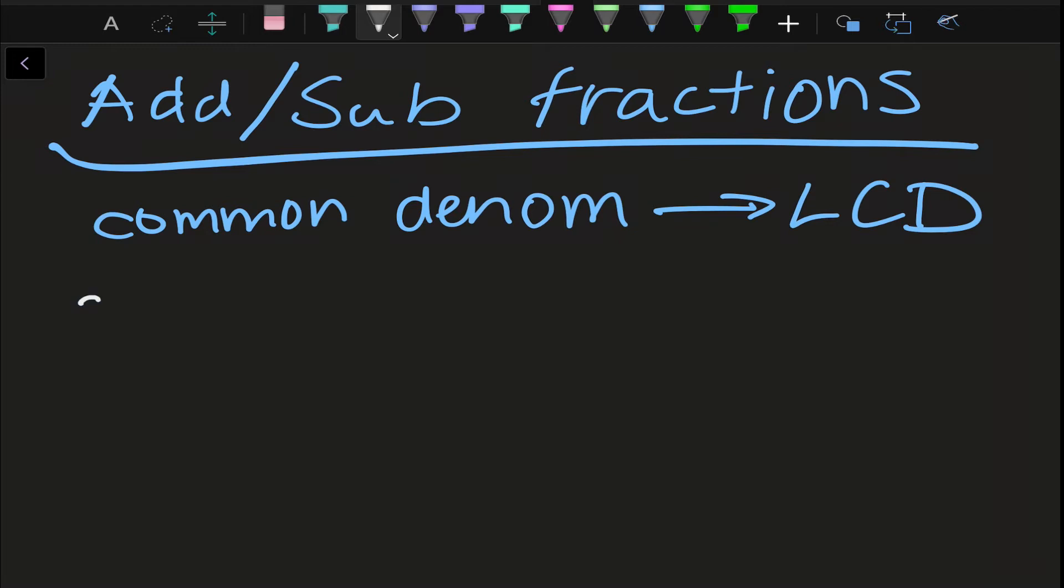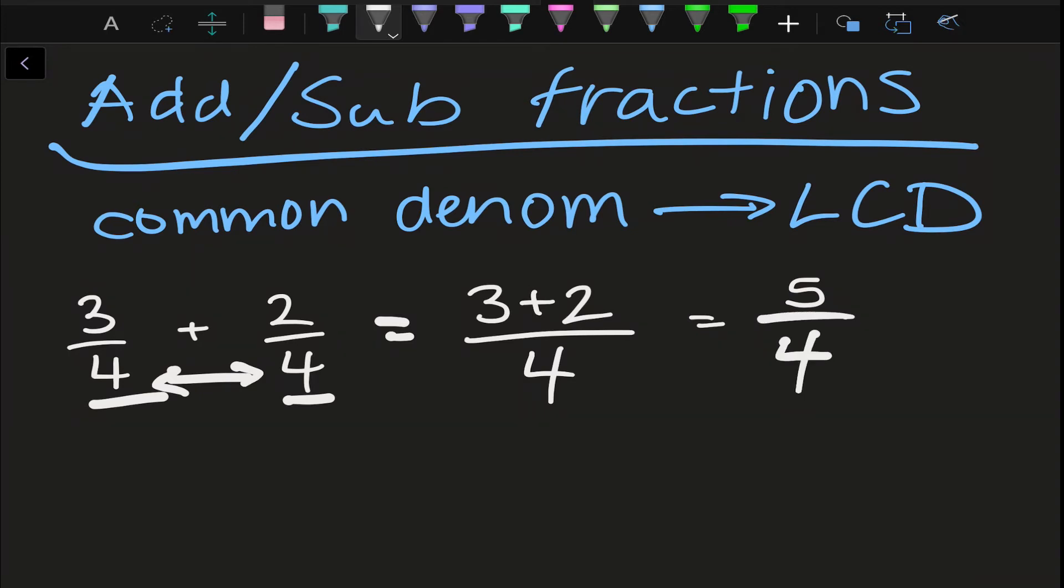For our first example, I will have 3 over 4, and I want to add 2 over 4. Now, the first thing we want to do is check those denominators. These two are the same, so we can just add the top. So it would be 3 plus 2 over, we don't add and subtract denominators, it just stays the same, over 4. So we get 5 over 4. Pretty straightforward.